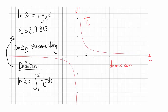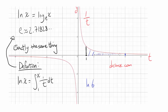Let's think about this. What is natural log of 2? You're going from 1 to 2 under this curve, so natural log of 2 is going to be this area — and it's positive because it's a positive area. Now what is natural log of 6? You're going all the way to 6, and the area from 1 to 6 is going to be larger than natural log of 2 because you went farther to the right.